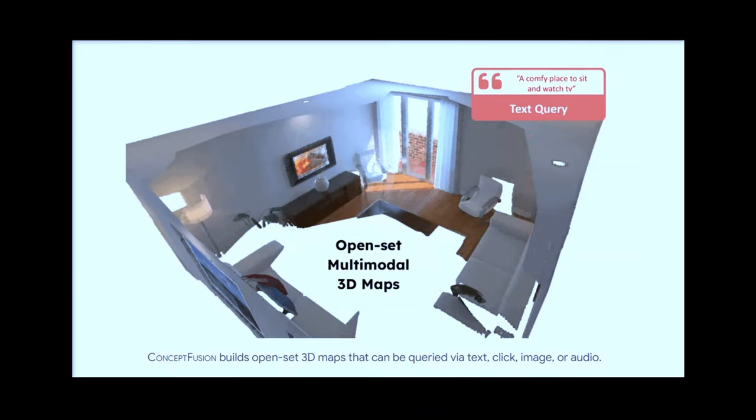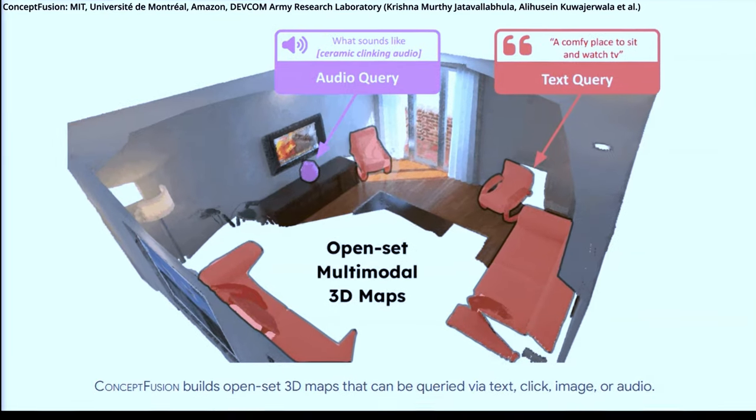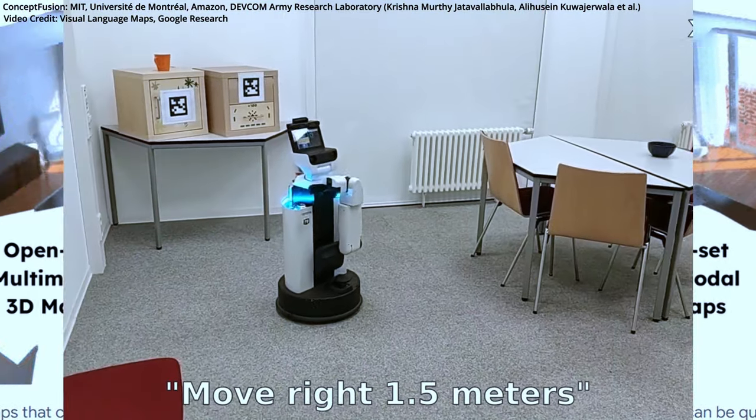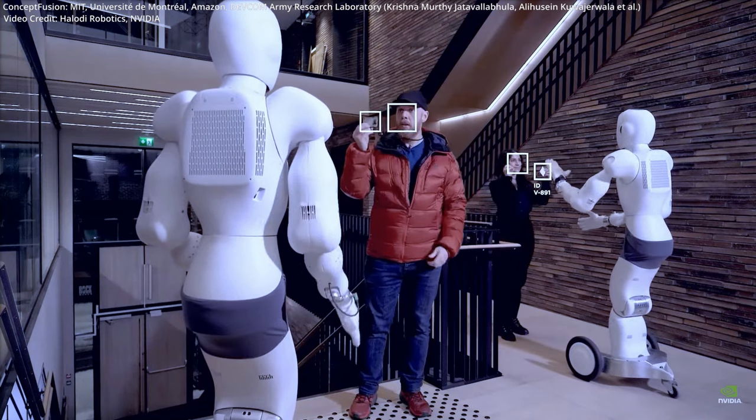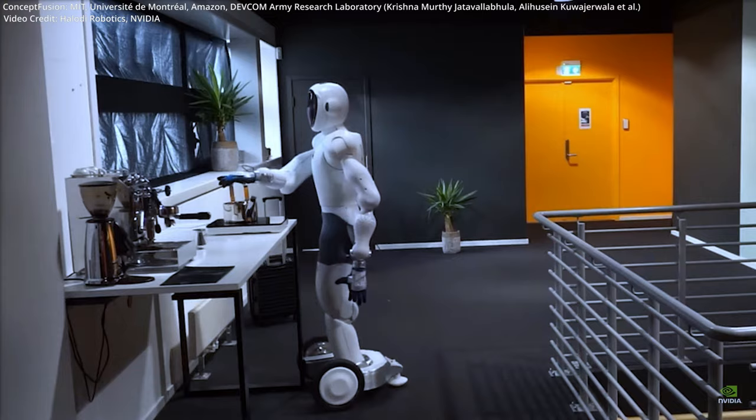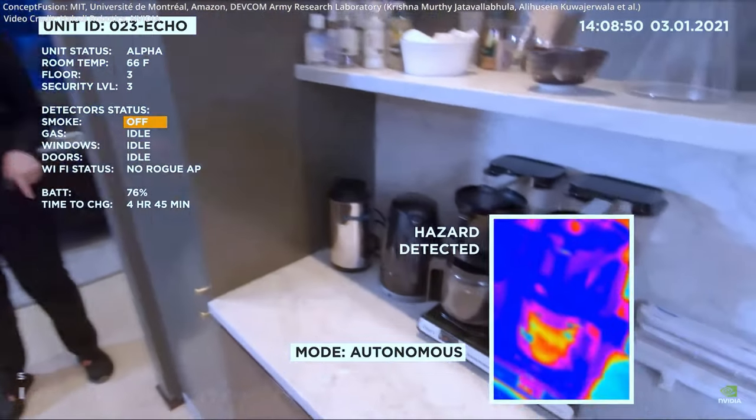Number 1. Open-set modeling, the key to infinite adaptability. While existing robot training methods are very limiting, open-set modeling unlocks a world of infinite adaptability, allowing robots to capture a vast array of concepts in great detail.